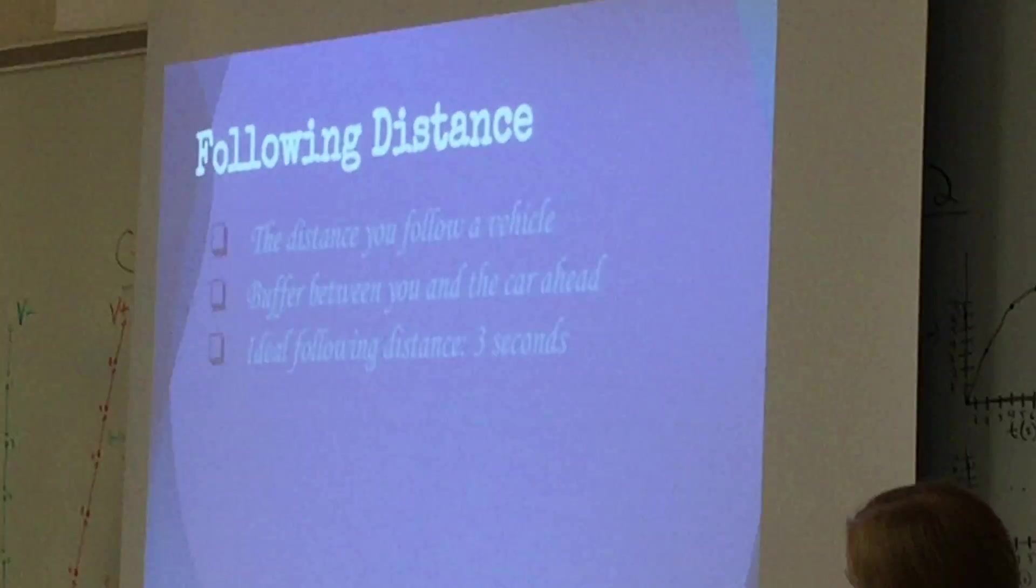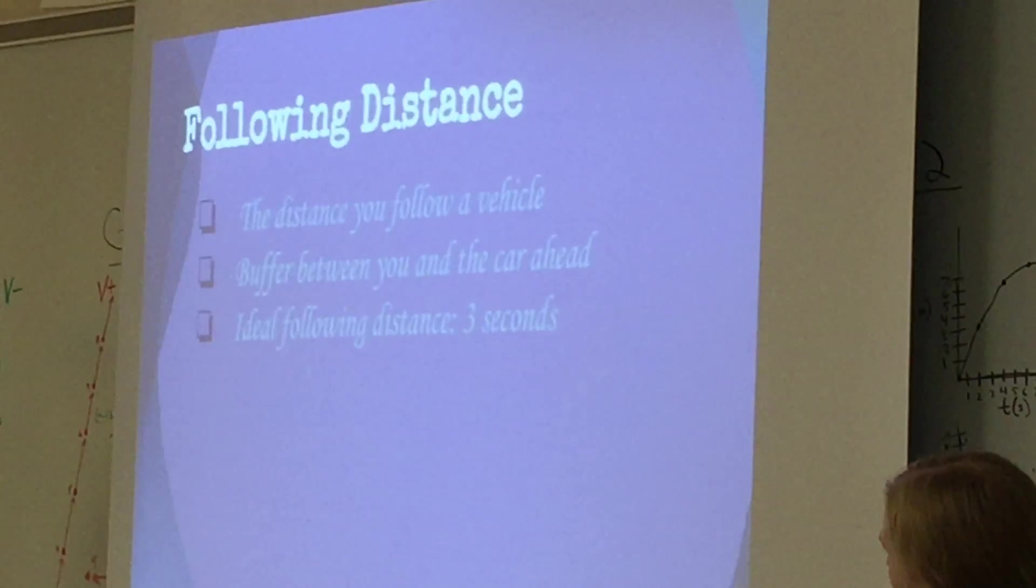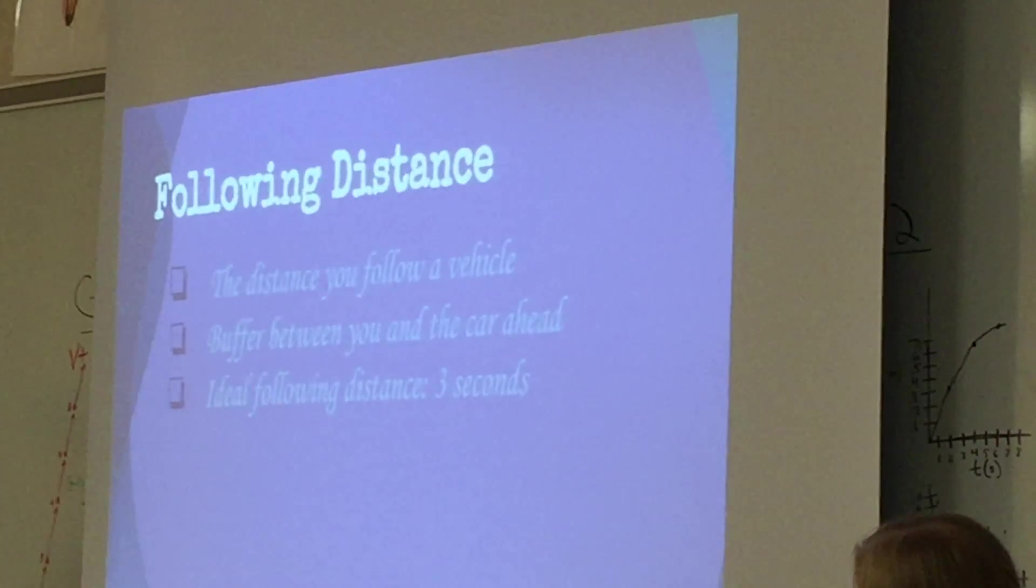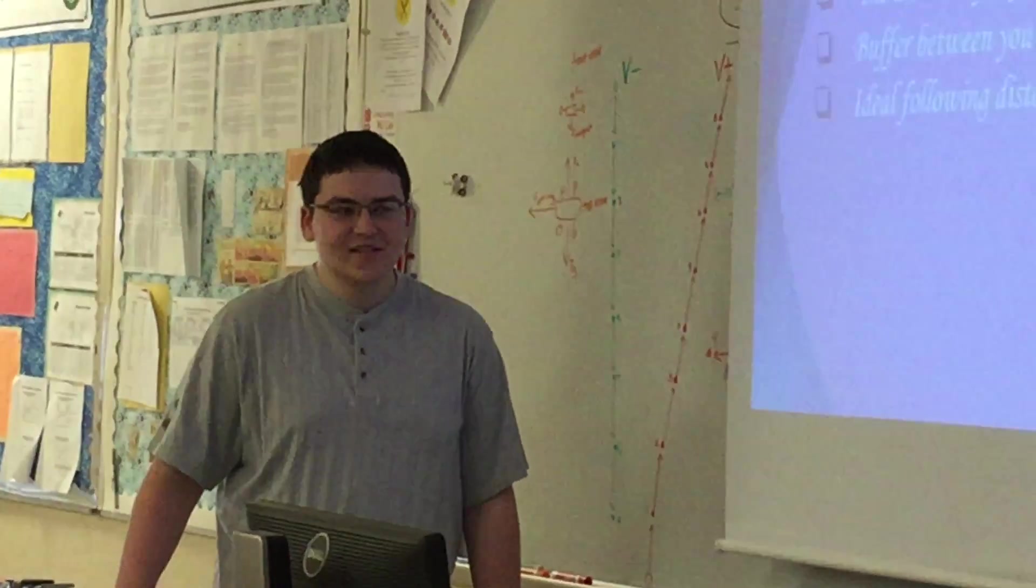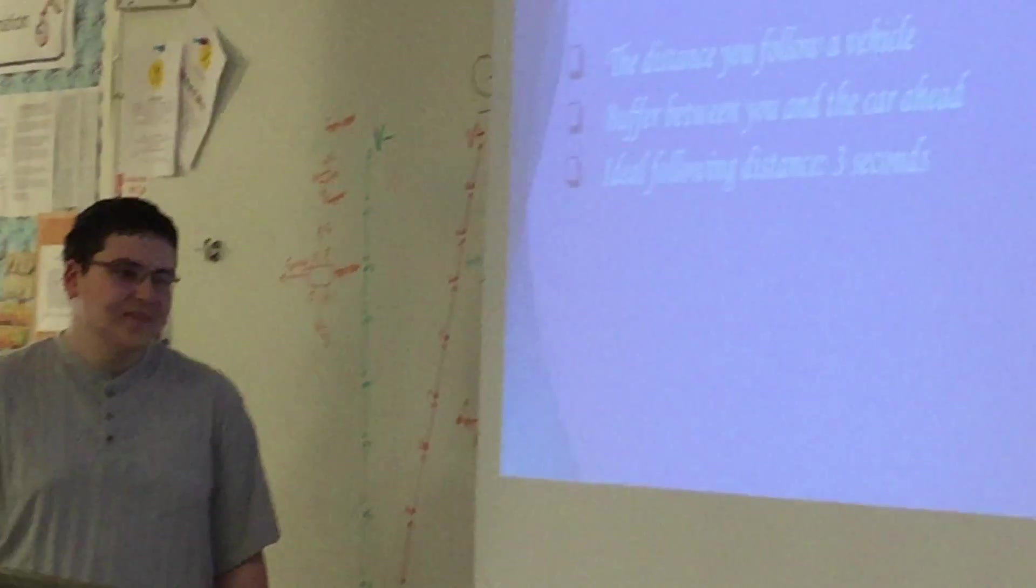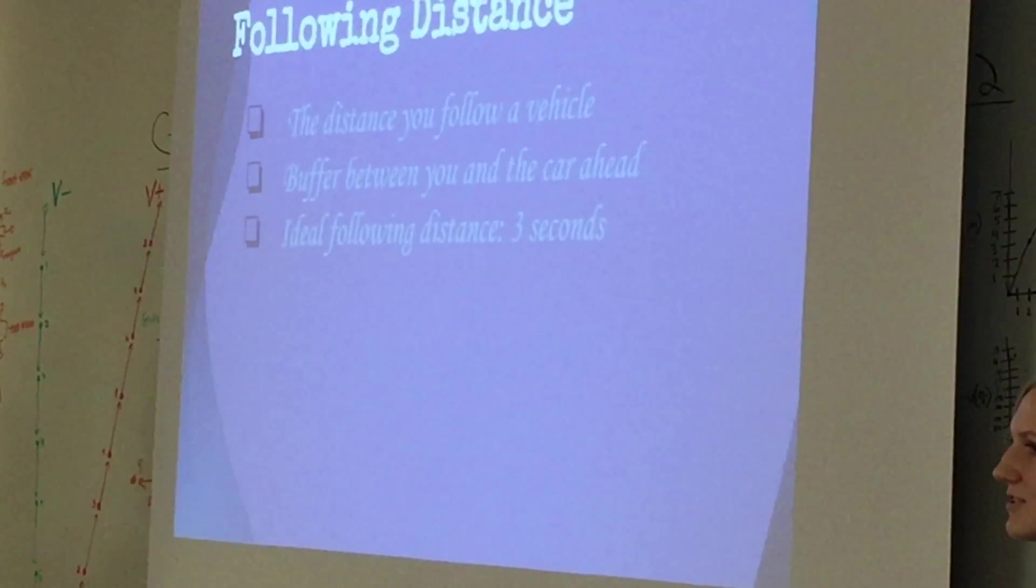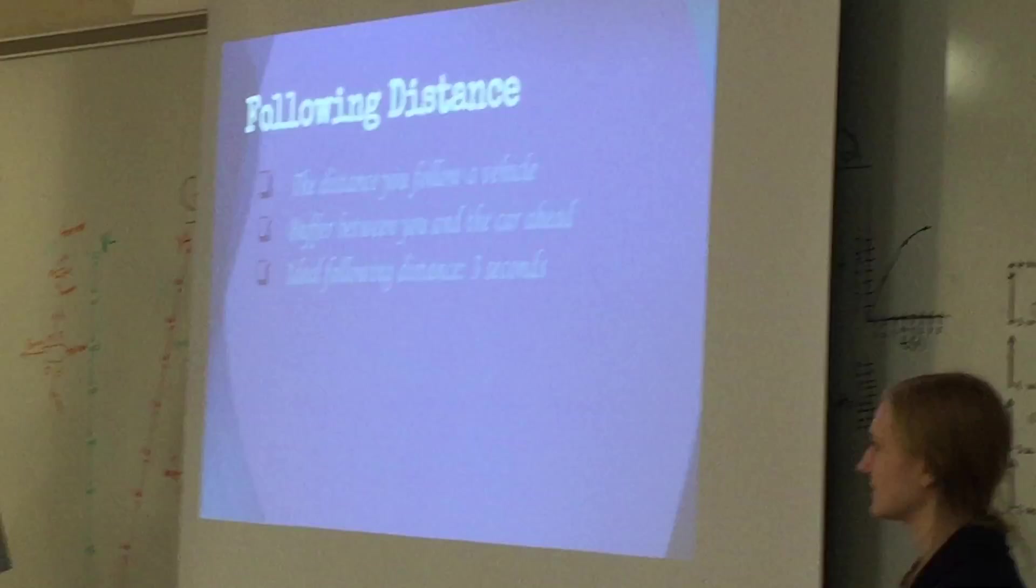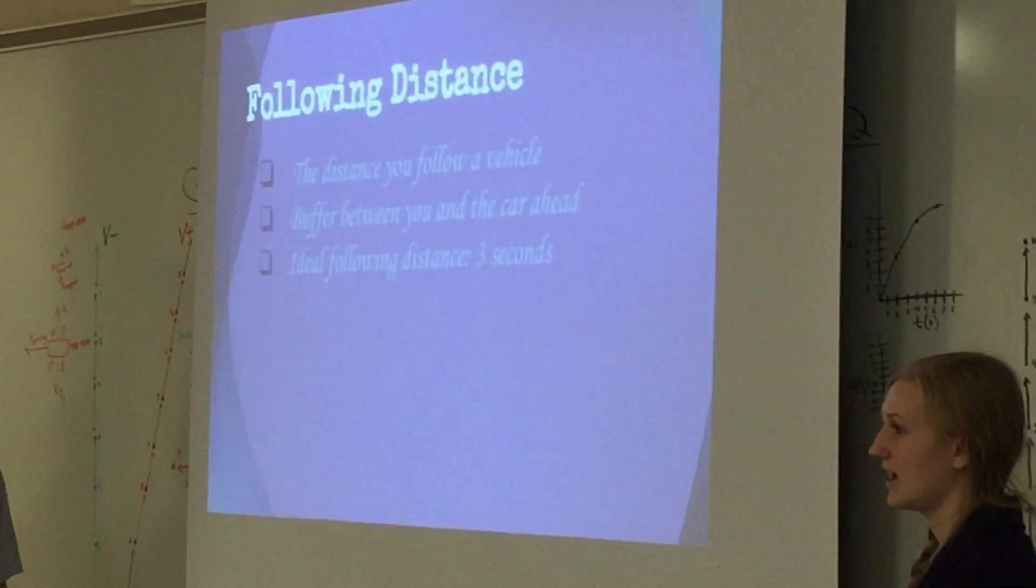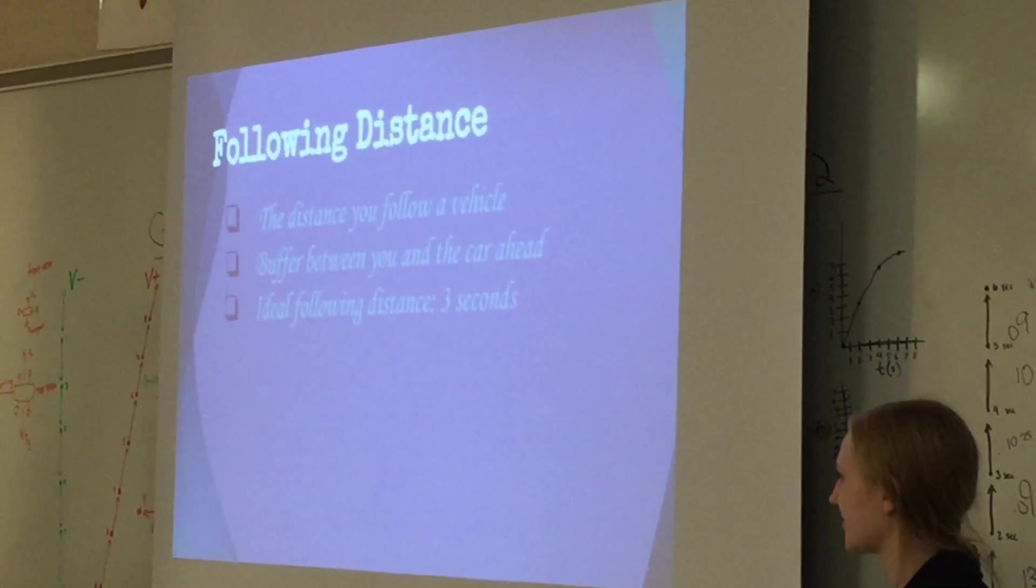The following distance is the distance that you follow a vehicle. It should be a buffer between you and the car ahead. An ideal following distance is three seconds. A way to track following distance is to pay attention to the car ahead of you and use something on the side of the road, such as a sign or a utility pole, as a marker.